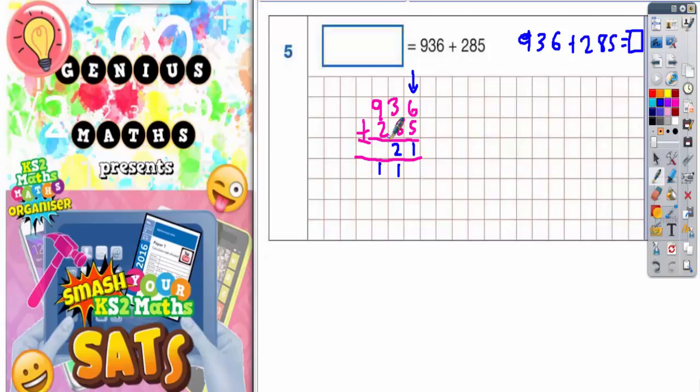Put the 2 in, carry the 1. And 9 plus 2 is 11, and 11 plus 1 is 12. Put the 2 in and carry the 1. As soon as you've got to the final column there, this one that we've just carried can just go straight in. So the final answer is 1221.